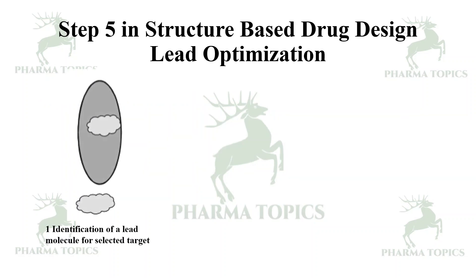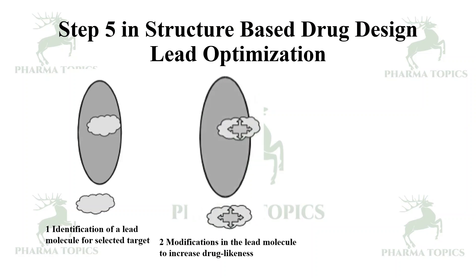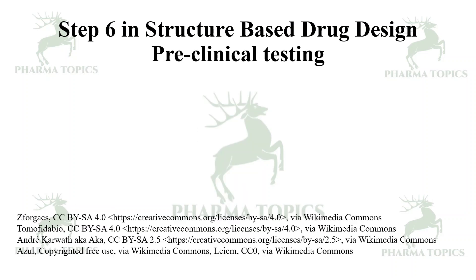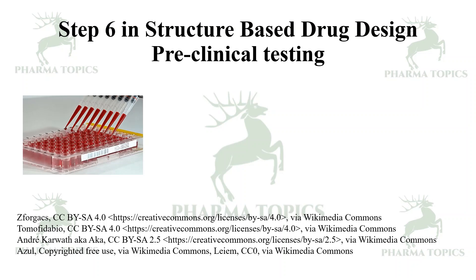Step 5 is lead optimization: identify the lead molecule for the selected target, then modify the lead to increase its drug-likeness. The optimized lead molecule can then be taken forward to further stages of drug discovery.